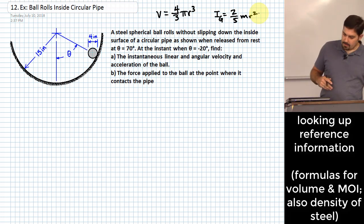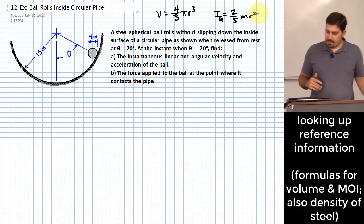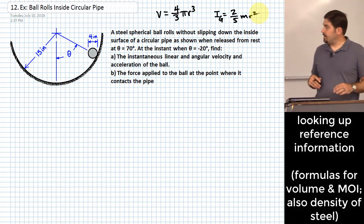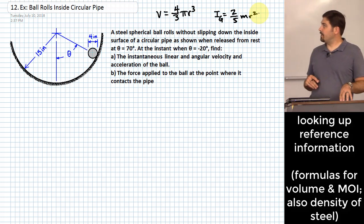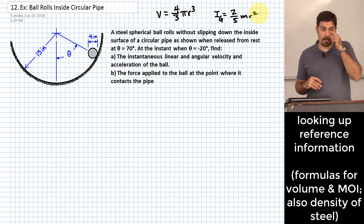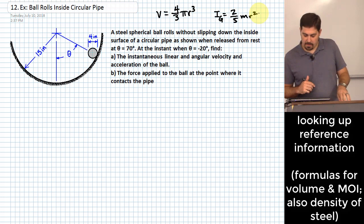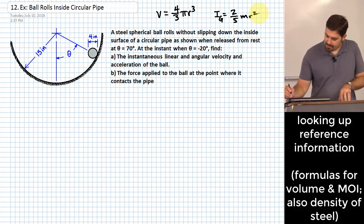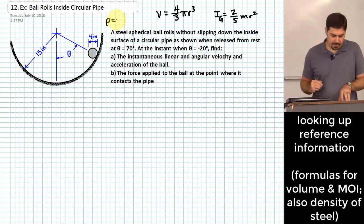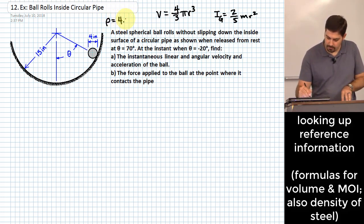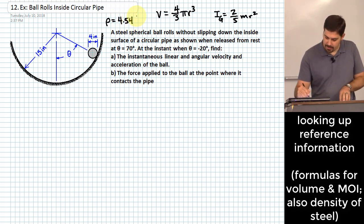We need the density of steel since we're told what material the ball is made of. The density of steel is 4.54 ounces per cubic inch.